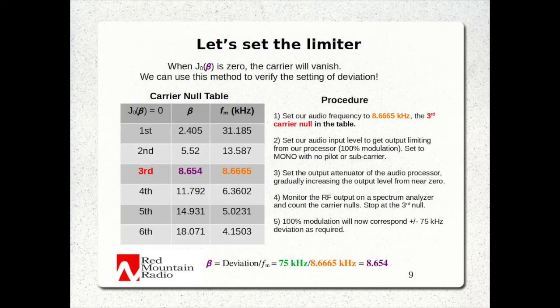So let's set the limiter — we'll do this for a mono signal, just to keep it simple. Step one: set our audio frequency to 8.6665 kHz, which is the third carrier null in the table. Step two: set the audio input level to get output limiting from our processor, corresponding to 100% modulation, with the processor set to mono with no pilot tone and no subcarrier. Step three: set the output attenuator of the audio processor, gradually increasing the output level from near zero. Step four: monitor the RF output on a spectrum analyzer and count the carrier nulls — stop at the third null. Thus, 100% modulation will now correspond to plus or minus 75 kHz deviation, as required.